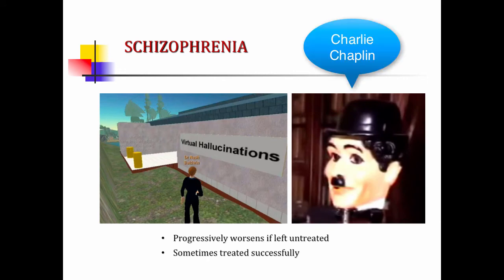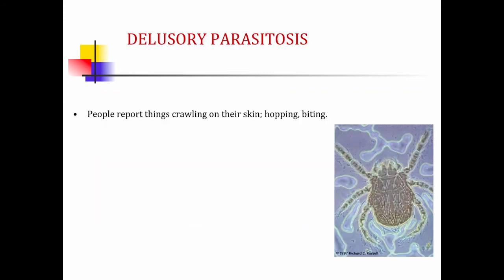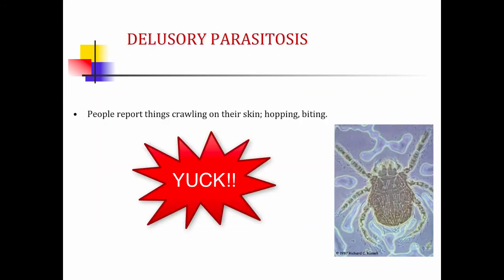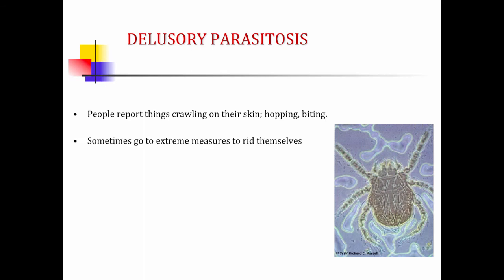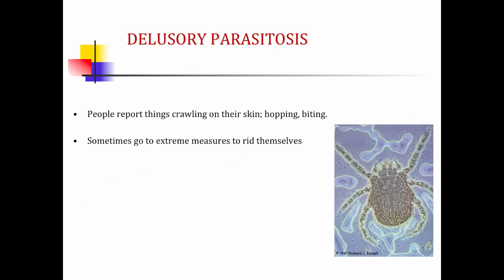Schizophrenia progressively worsens if left untreated, but it can sometimes be treated successfully. There is also a disorder in which individuals feel like bugs are crawling on them and go to extremes to remove them — pouring kerosene on themselves or using agricultural pesticides to kill something that isn't there. These individuals are usually treated with medications to calm them down.